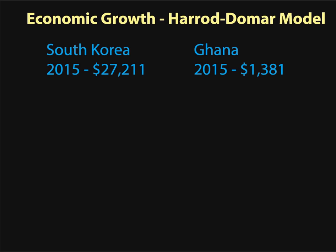What's interesting, though, is if you look way back at 1960 — the first point that the World Bank has data on this — actually Ghana was a tad wealthier than South Korea. GDP per capita was 183 US dollars as opposed to 156. Both countries were rather poor at the time, but why in the last 55 years or so did South Korea grow so much more than Ghana? Think about all the quality of life improvements that means for people living in South Korea.